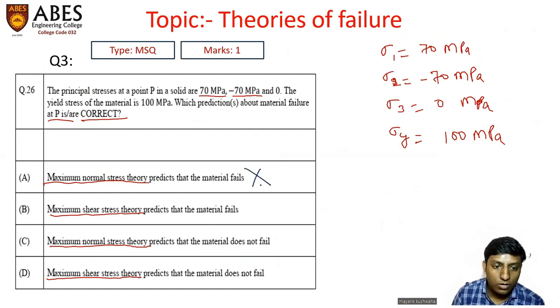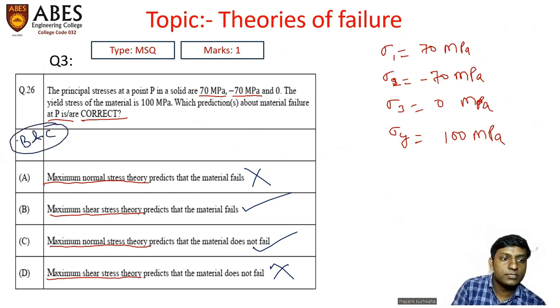Maximum stress theory predicts the material fails, which is wrong. Maximum shear stress theory predicts that the material fails, very good. Maximum normal stress theory predicts that the material does not fail, absolutely right. Maximum shear stress theory predicts that the material does not fail, which is wrong.